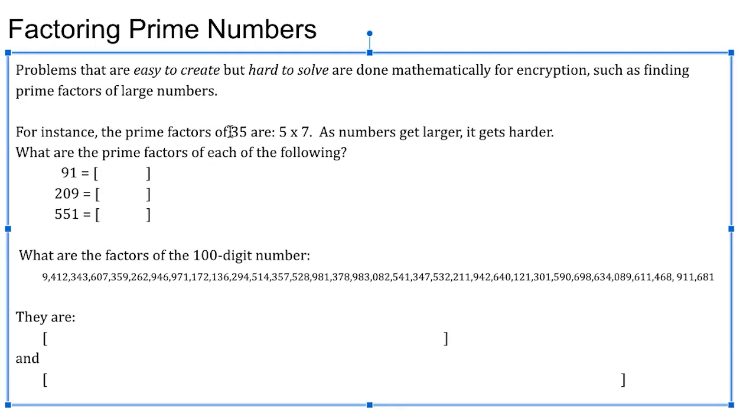So let's think about 35. So 35 is 5 times 7. So 5 and 7 are both prime numbers. They're divisible by 1 and themselves, but not by anything else. So 5 and 7 are both prime, and 5 times 7 is 35. So prime factorization, you're probably familiar with this.